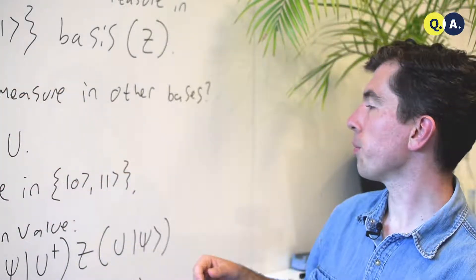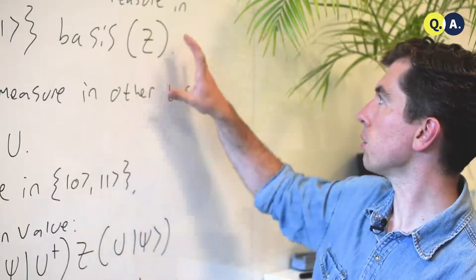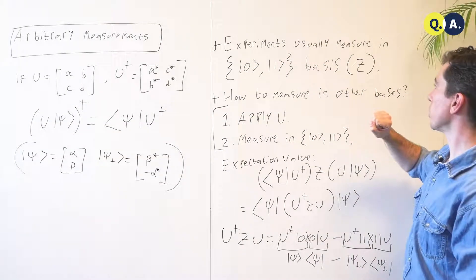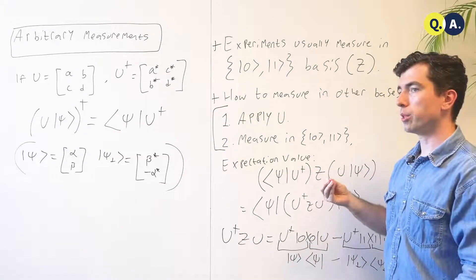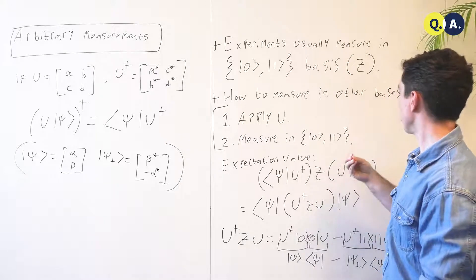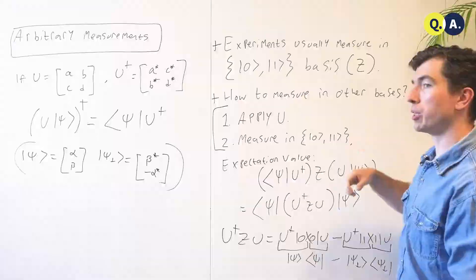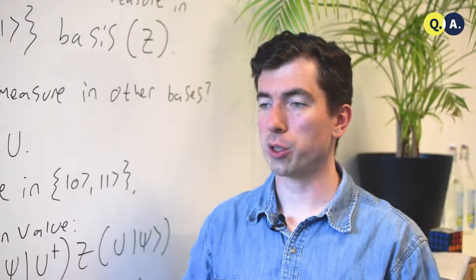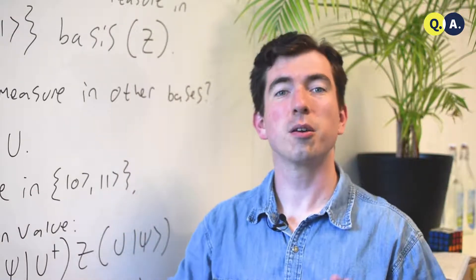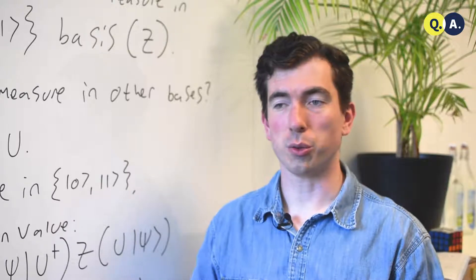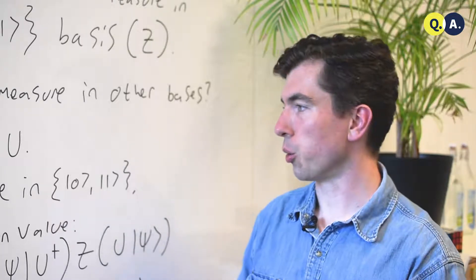And with those three ingredients, we can solve this question. So experimentalists usually measure a single operator, the Pauli z operator, that was perhaps discussed earlier, but we'd like to be able to measure in whatever basis we want, so that if we have a question, is the state this or that, we can answer it without having to restrict ourselves to the zero, one basis.